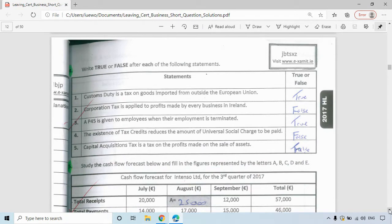This is tax questions in unit four. Customs duty is a tax on goods and services imported from outside of the EU. That's correct. Corporation tax is applied to profits made by every business in Ireland. That's false. A P-45 is given to employers when their employment is terminated. That's true. The existence of tax credits reduce the amount of USC to be paid. That's false. And capital acquisitions tax is taxed on the profits made from the sale of assets. That's false as well.